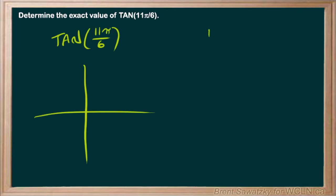11 pi over 6, where does that fit into everything here? It's pretty close to 12 pi over 6. And we know that 12 pi over 6, 12 over 6 is 2 pi. So, almost a complete circle, but just a little less.